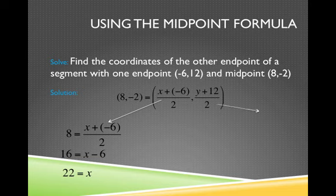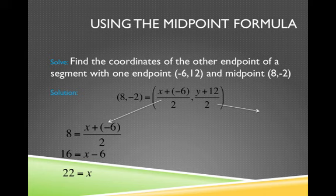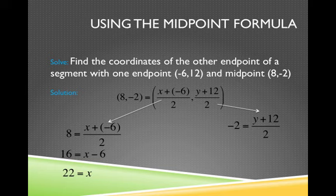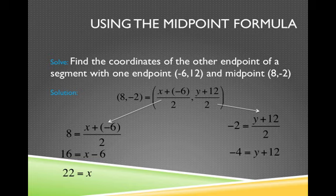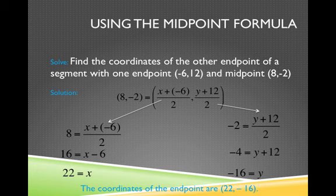On the other side, I'm going to take the y-coordinate of my midpoint and set it equal to the part inside the parentheses on the right, or rather known as the y-coordinate of my midpoint. So I have -2 equals (y + 12)/2. Can we solve this for y? You bet we can. I'm going to multiply both sides by 2, I'm going to subtract 12, and I get -16. And so the coordinates of the other endpoint are (22,-16).